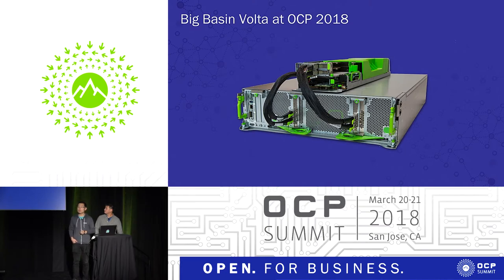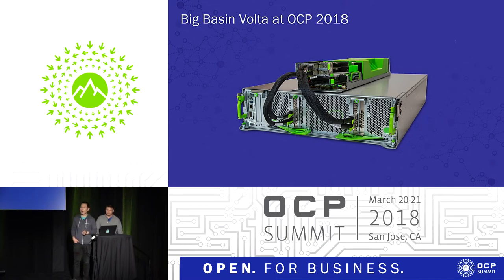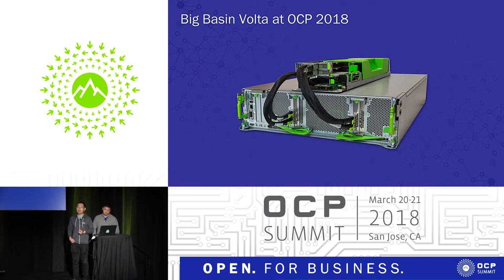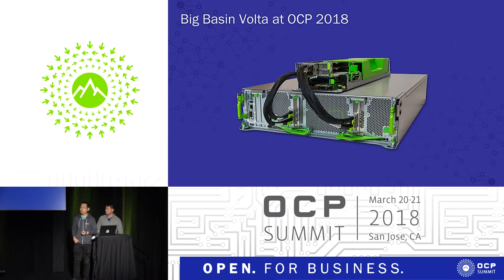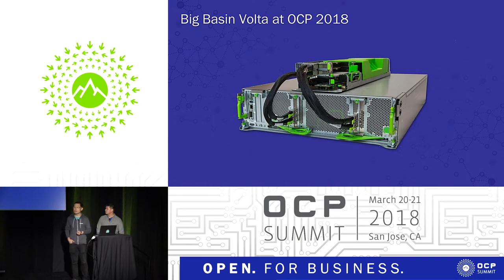Big Basin Volta is built on the same design philosophy. It is our second generation disaggregated design, which disaggregates the CPU compute head node from the GPU box. As we can see in the figure, the CPU head node sits on top of the GPU box, and they communicate via PCIe cable. This modular design allows us to take advantage of existing OCP components to build a customized design optimized for application performance, power efficiency, and total cost of ownership.